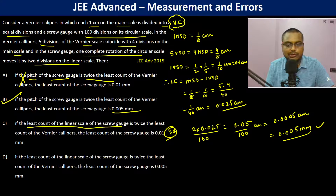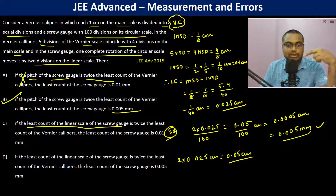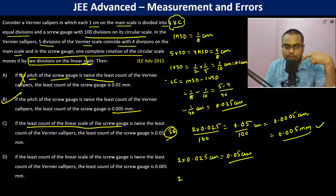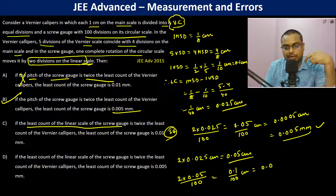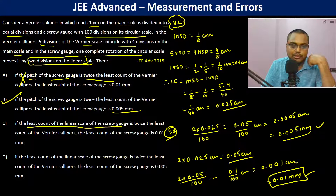Now, the least count of the linear scale of the screw gauge is twice the least count of the vernier caliper: 2 × 0.025 centimeter = 0.05 centimeter. On one complete rotation, two divisions of the linear scale are moved, so the least count is 2 × 0.05 divided by 100 = 0.1/100 centimeter = 0.001 centimeter = 0.01 millimeter. Therefore option C is also correct.